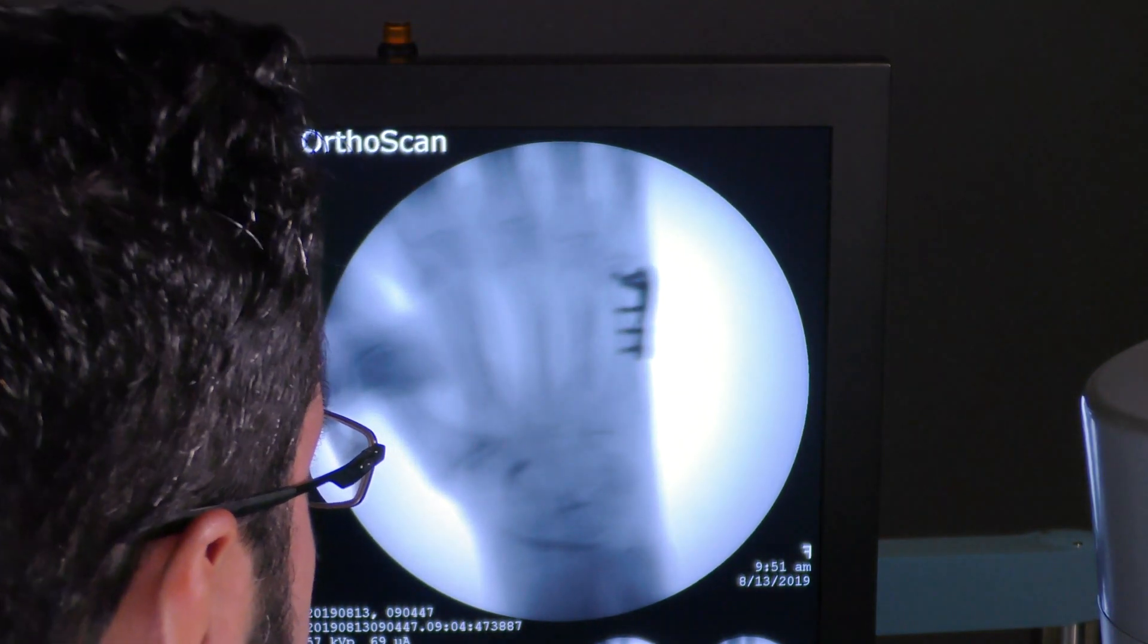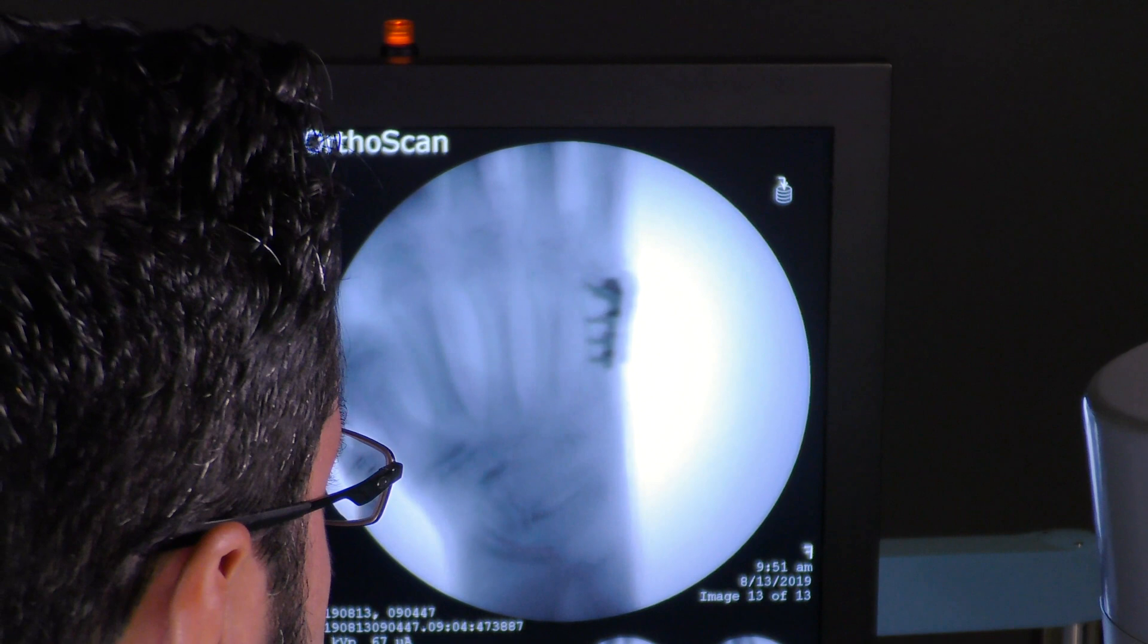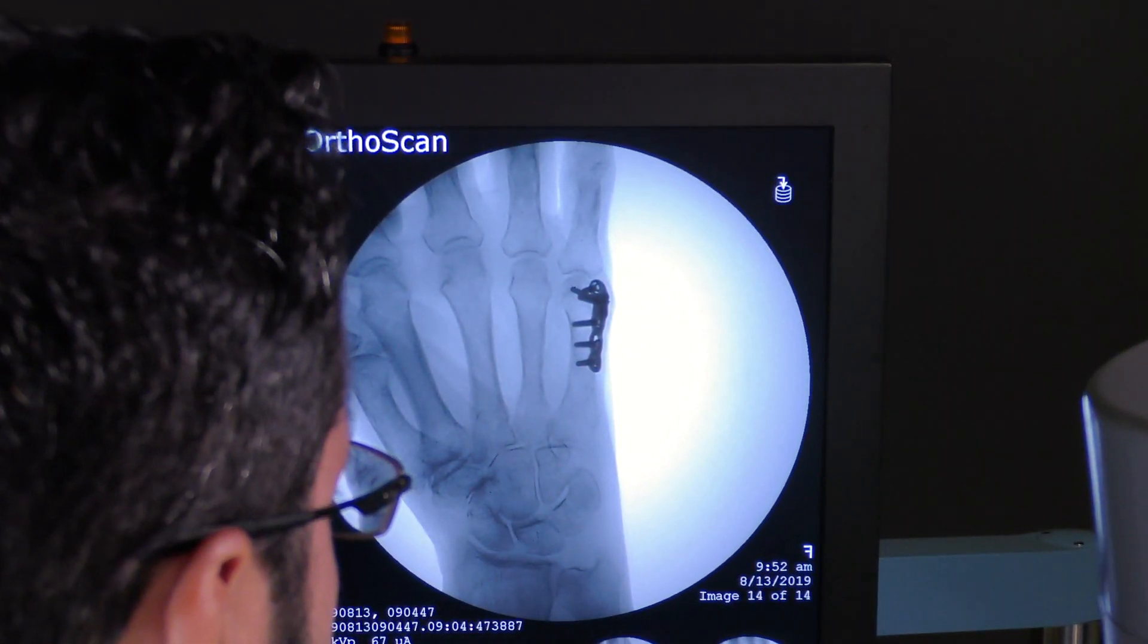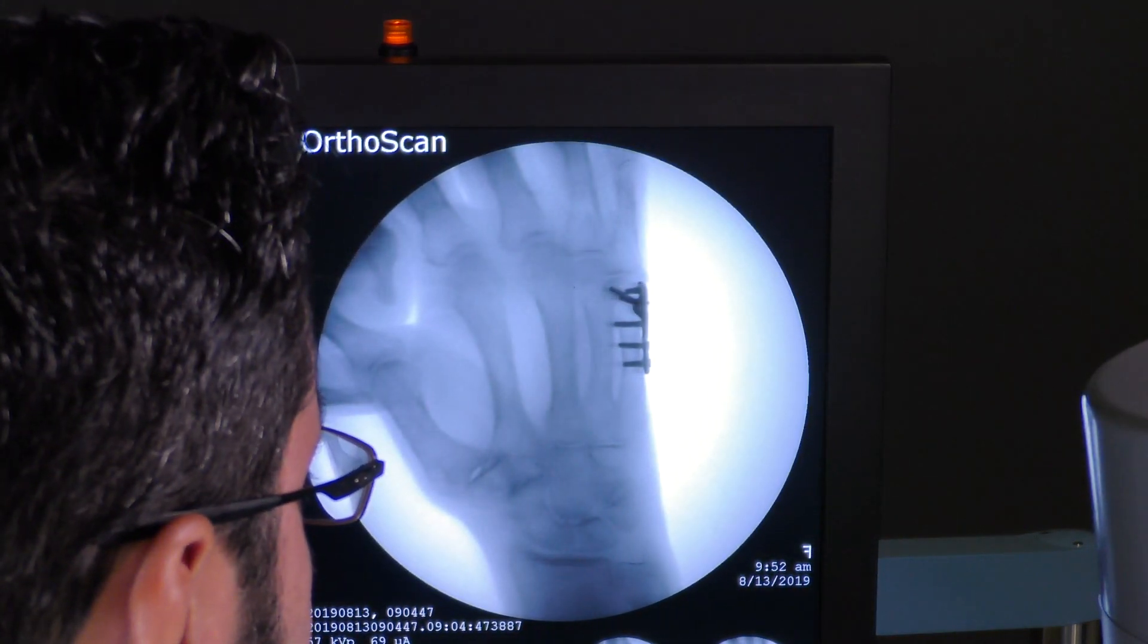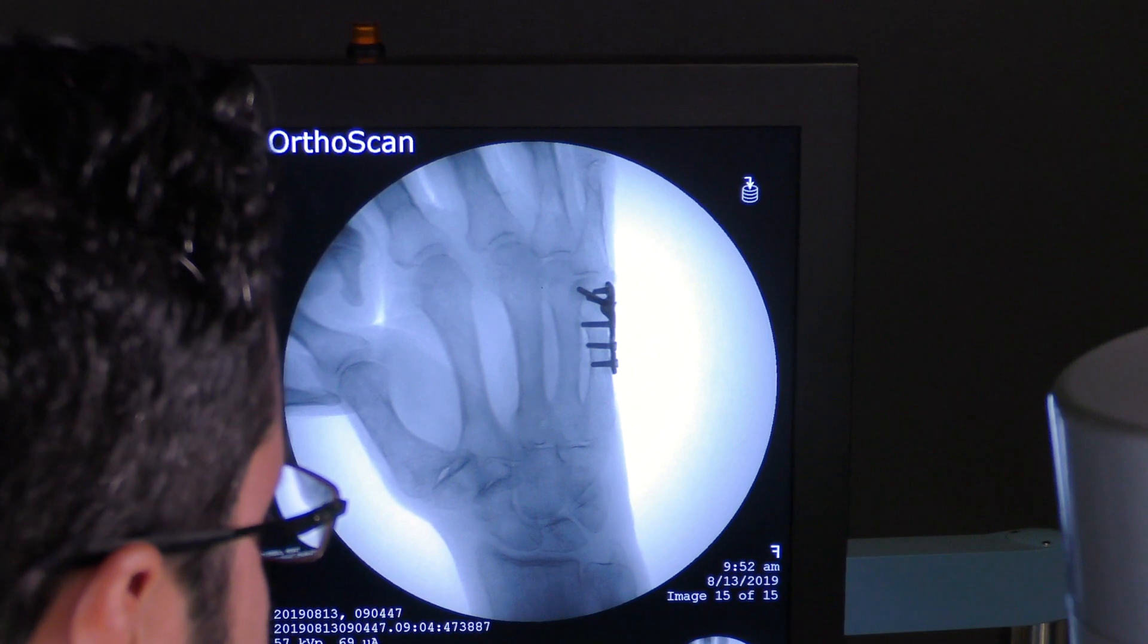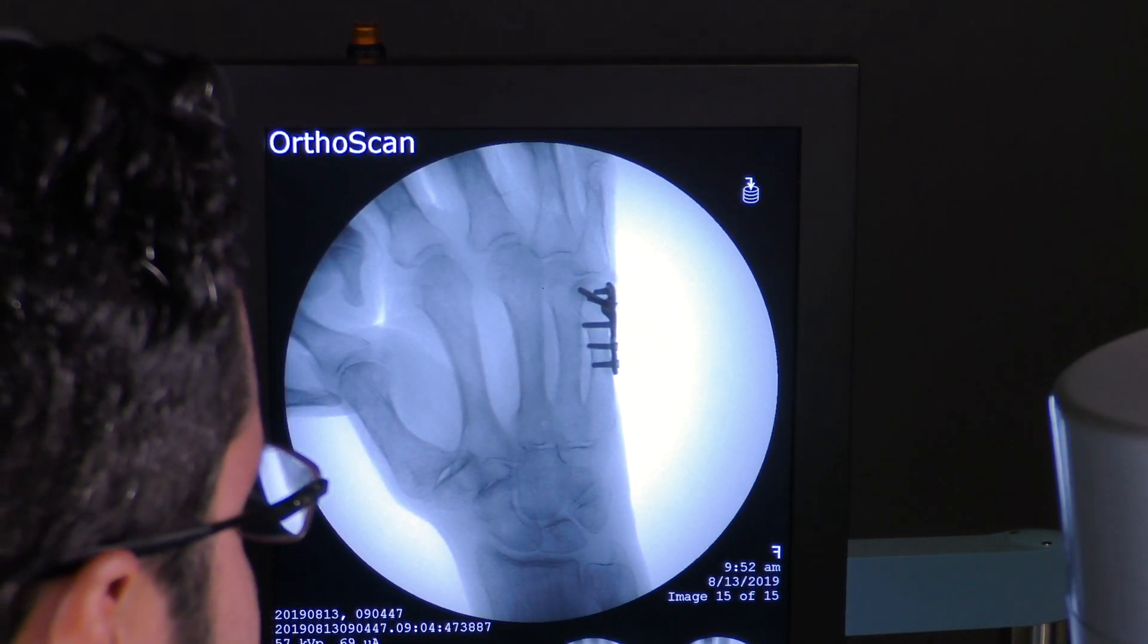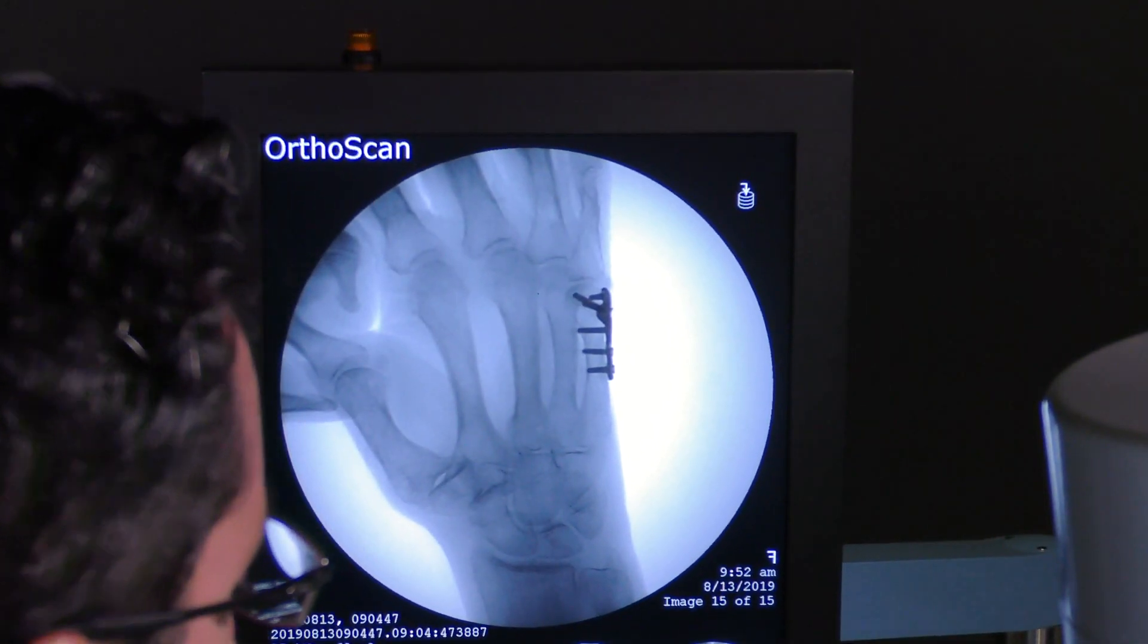All right, so here's our final construct. What I want you to appreciate is a few things. One is the placement of the plate more radial. I want you to appreciate the angle of the screws, the splay, and the interdigitation in the distal fragment, recognizing that this is a periarticular fracture, so you can't go bicortical anymore, right?